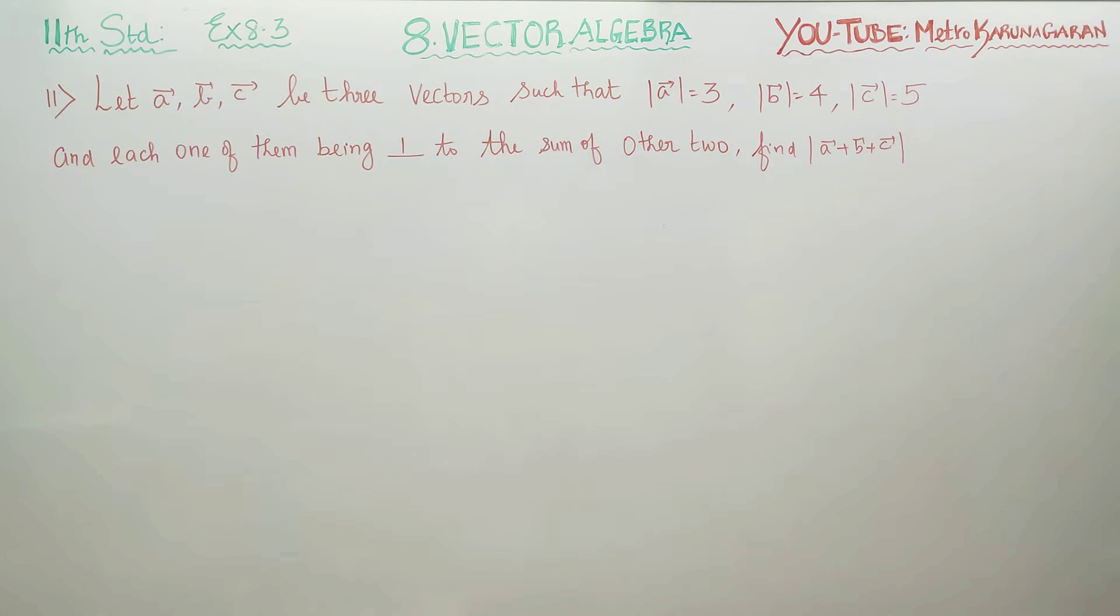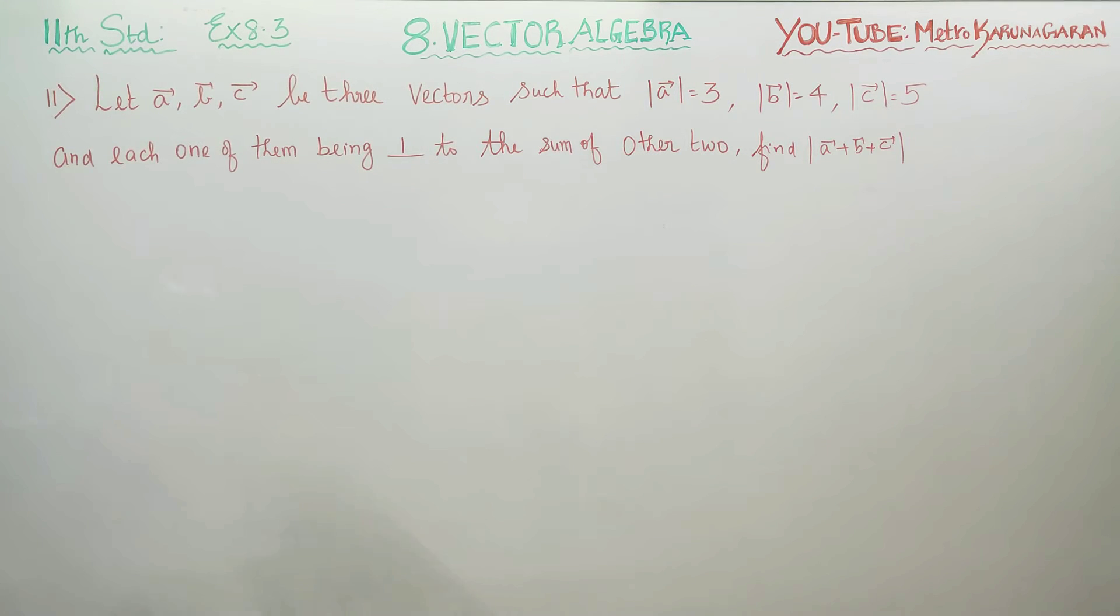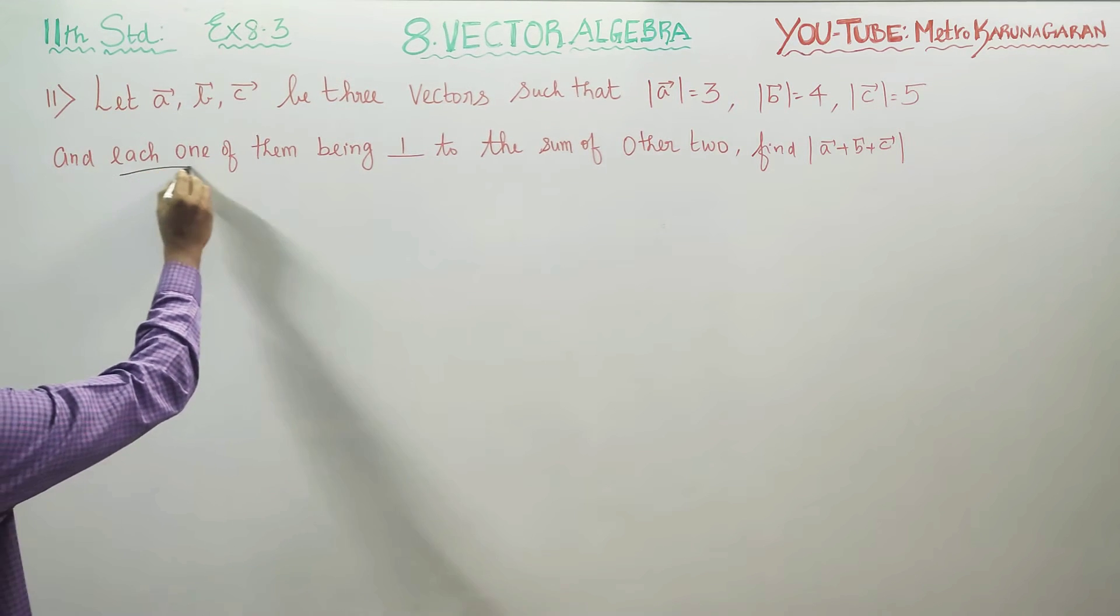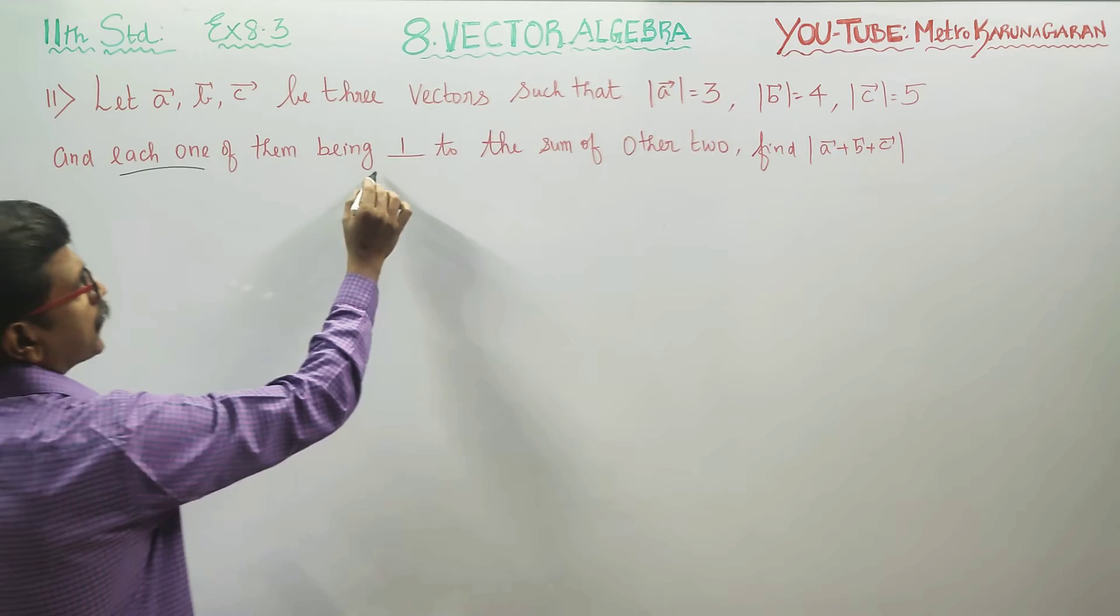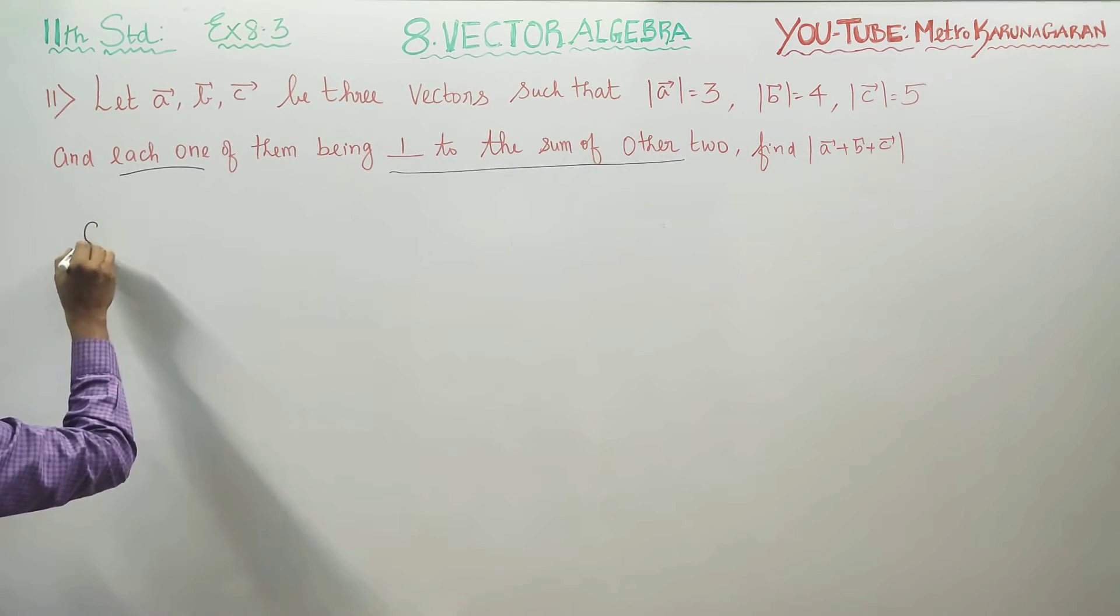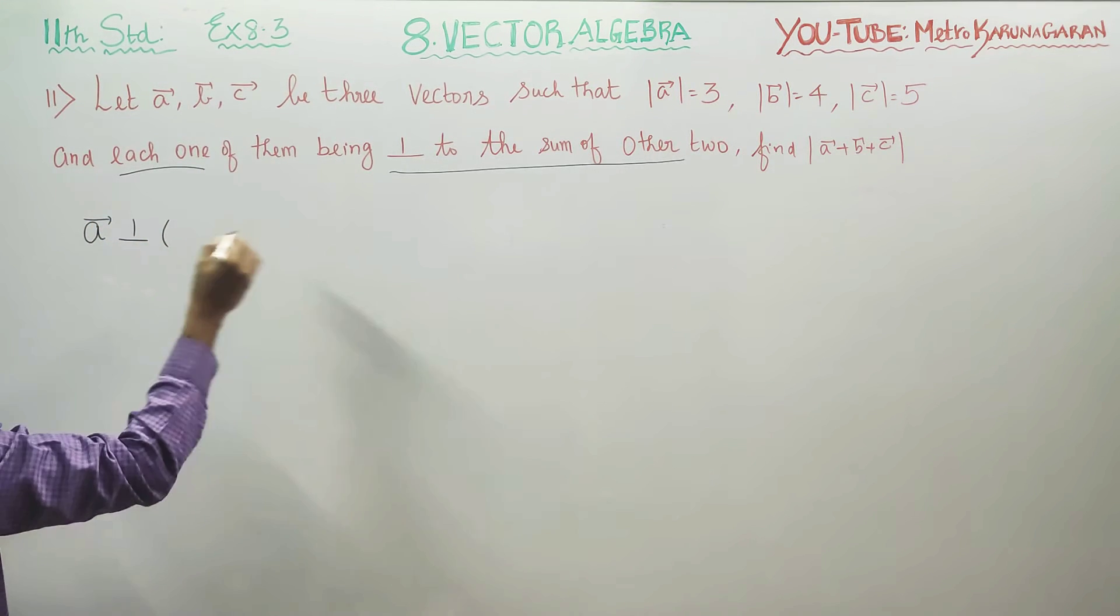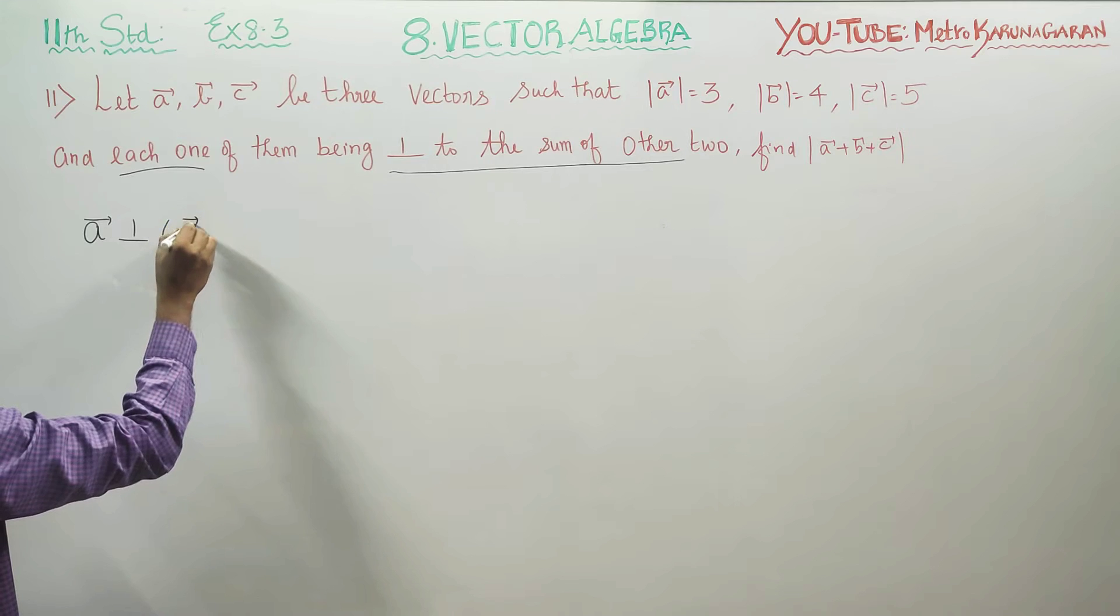Dear 11th standard students, in exercise number 8.3 problem number 11, let A vector, B vector, C vector be three vectors such that each one of them is perpendicular to the sum of the other two vectors. That is, A is perpendicular to the sum of the other two. Other two means B plus C.